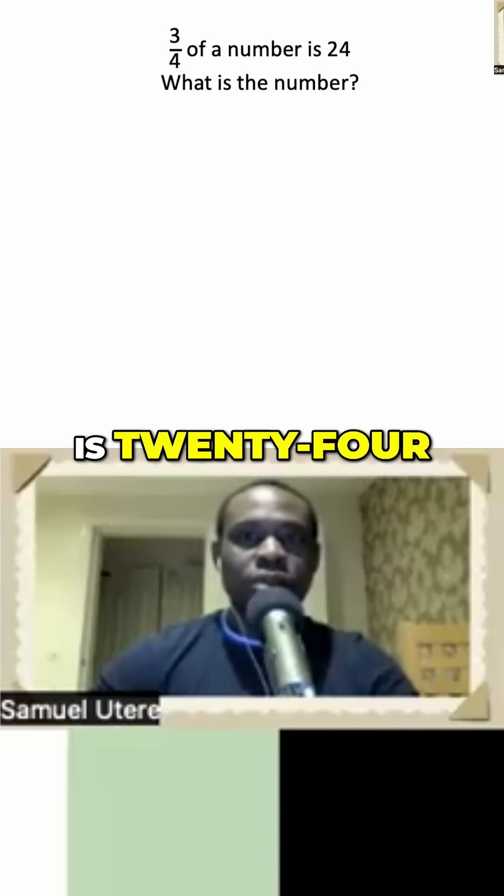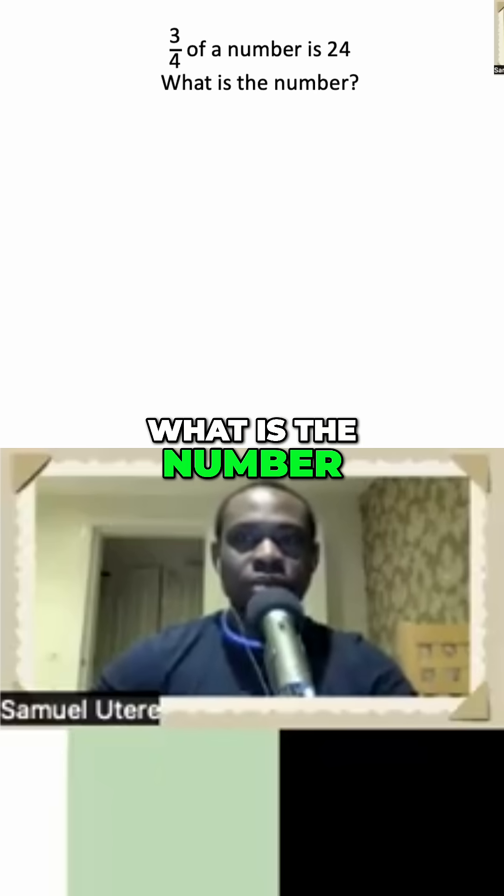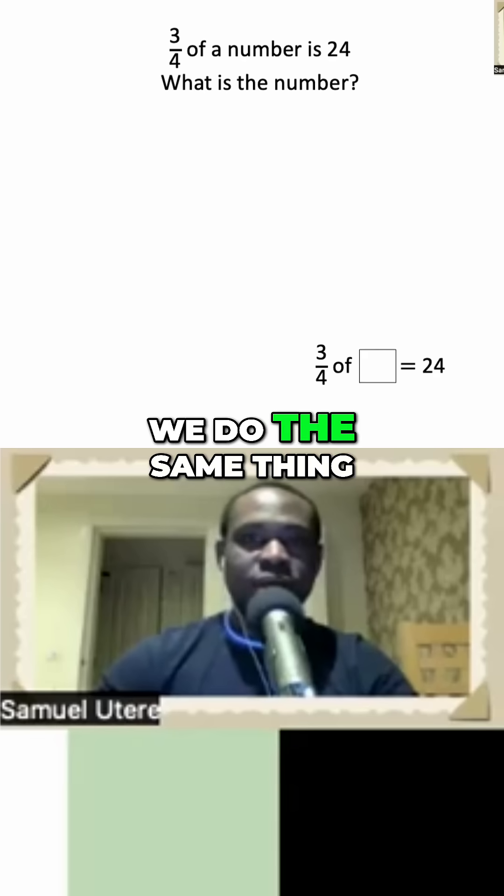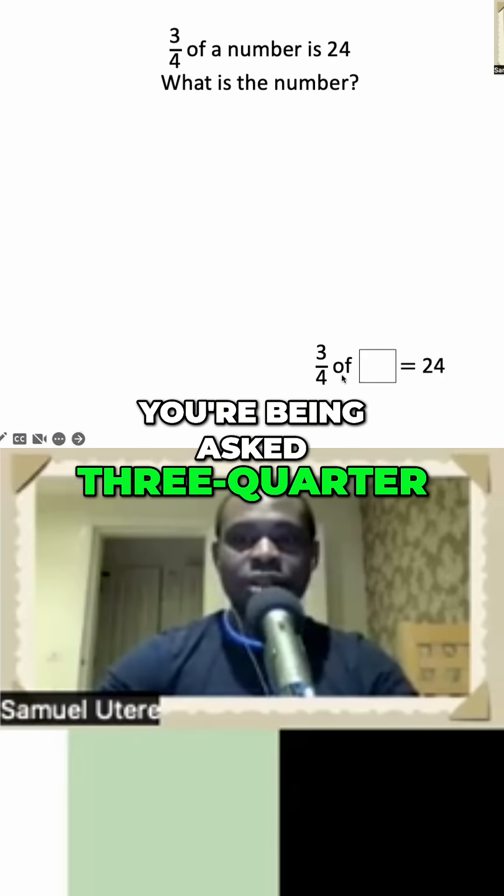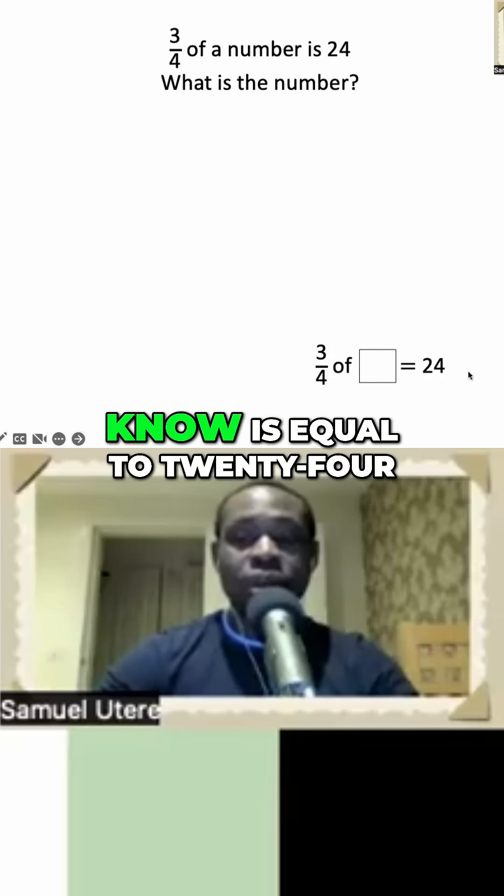Three-quarter of a number is 24. What is the number? So again, we do the same thing. We write it. This is what it means. You're being asked three-quarter of something you don't know is equal to 24.